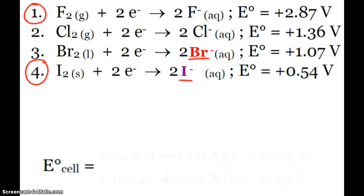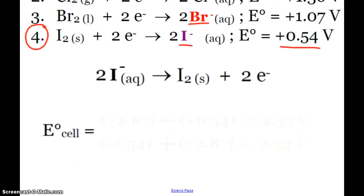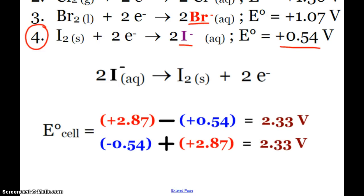Then it asks, write the half reaction that would occur at the anode. My anode would be the less positive. So 2.87 compared to 0.54, I would pick the iodine reaction that is going to be occurring at the anode. What is my cell potential? Either way I do it, I'll end up with a voltage of 2.33 volts.